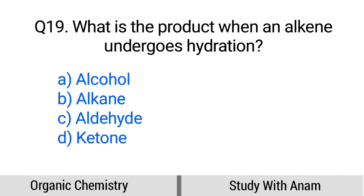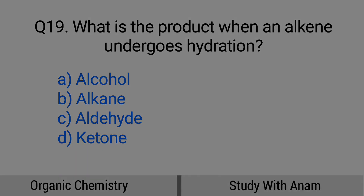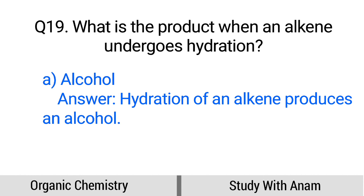Question number 19. What is the product when an alkene undergoes hydration? Option A: Alcohol, B: Alkene, C: Aldehyde, D: Ketone. The correct option is option A, Alcohol. Hydration of an alkene produces an alcohol.